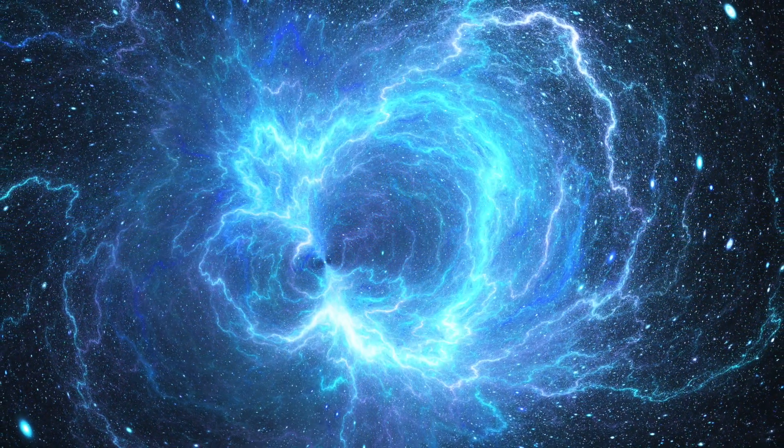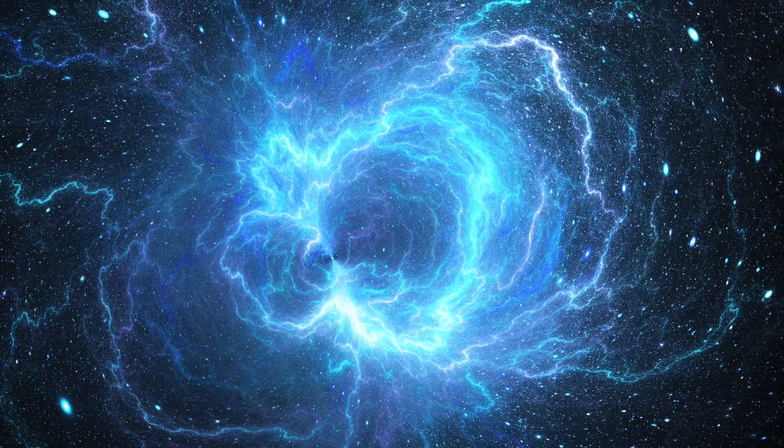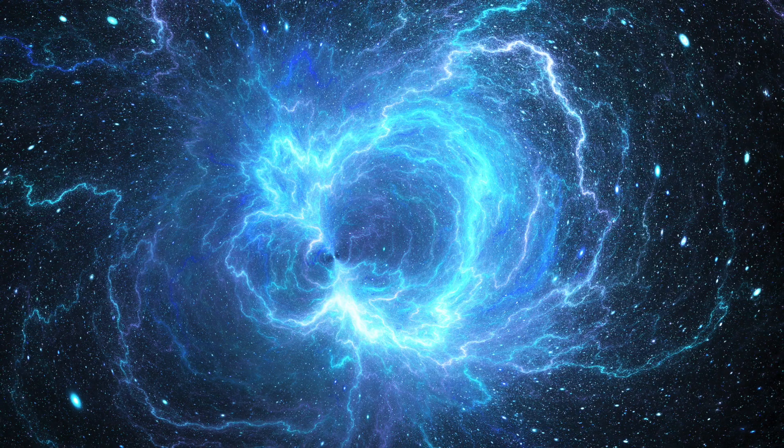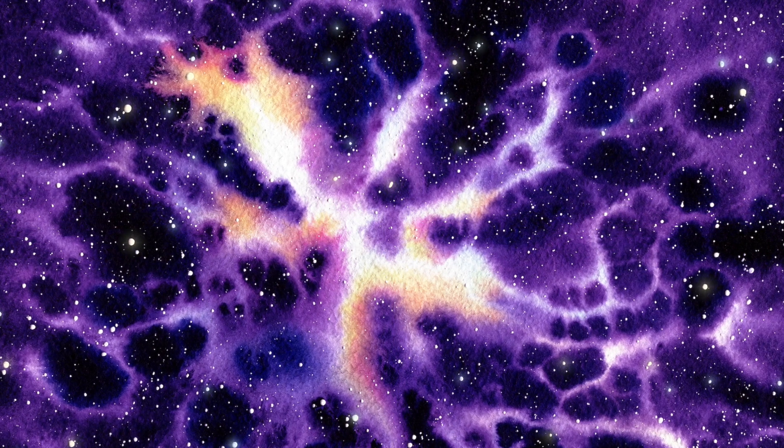GRBs or giant gamma-ray bursts are emitted when a dying star runs out of fuel. It eventually implodes, forming a black hole. During this process, huge quantities of energy get blasted in the form of collimated beams.